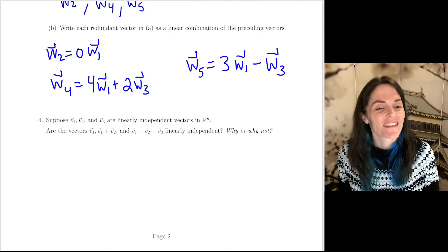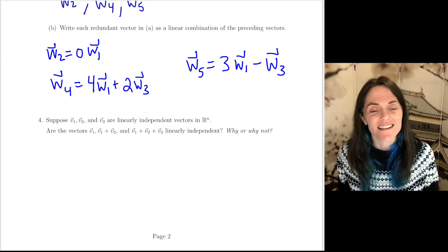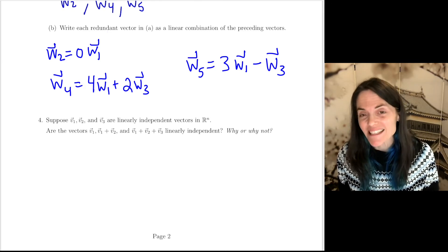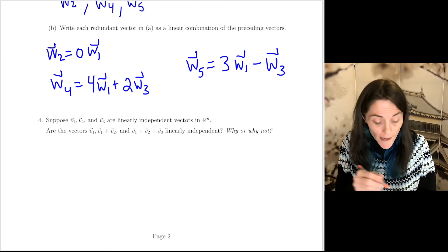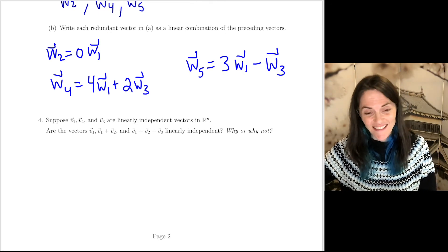Number four. This is the last question on this worksheet, and it might be a little challenging, but it's also a really great question for us to think about. So we are given V1, V2, V3 are linearly independent.